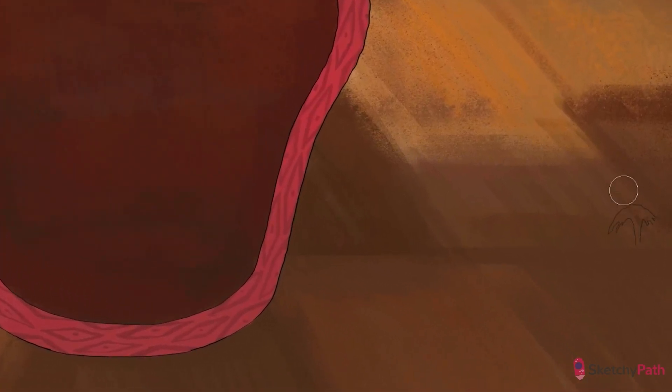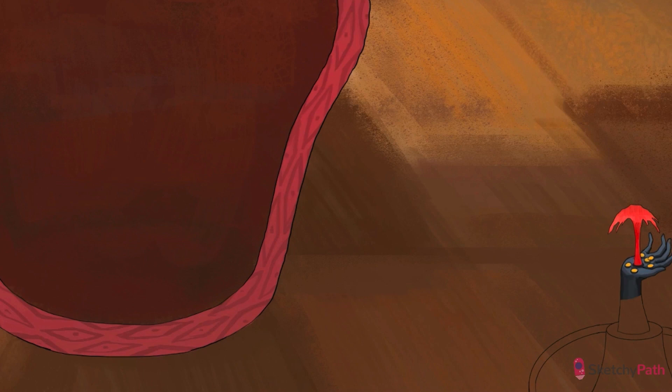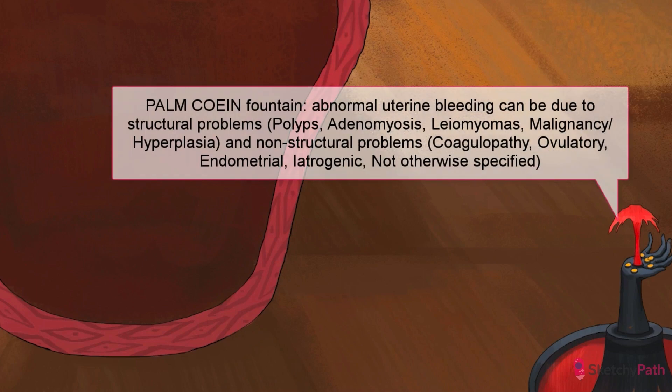Don't worry if you're not prepared for these scenarios — especially that third one. We're going to break down abnormal uterine bleeding into just a few important pathologies that you should keep in mind for the exam. Now, what does an eerie hand fountain have to do with all this — and is that blood?